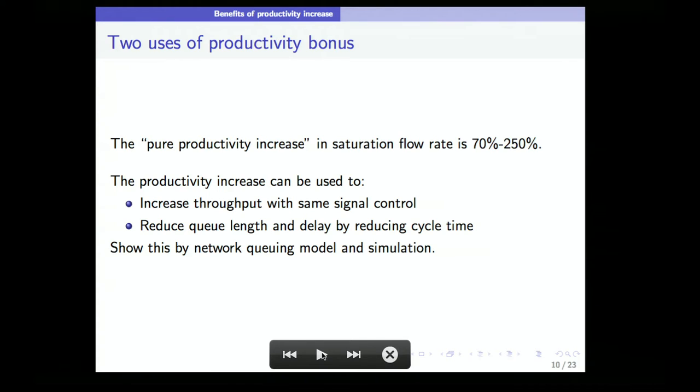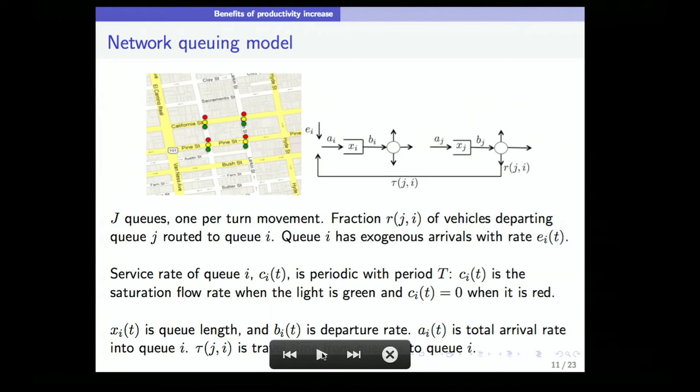There's perhaps a more interesting use: you can reduce the queue length and delay by reducing the cycle time. The queues form because of the red. During the red, vehicles just arrive and stack up. If instead of having green for 30 seconds and red for 30 seconds, I could reduce them—green for 15 and red for 15 and green for 15 and red for 15—then your queue buildup will be reduced by a factor of 2. Why don't we do that? The reason is because whenever you change phase, safety requires a 3 second all-red period. If you reduce that cycle time, you pay a penalty. But if I have so much productivity increase, maybe I can pay that penalty and reduce the cycle time.